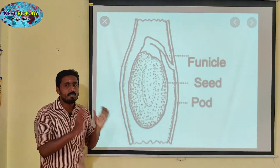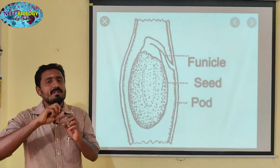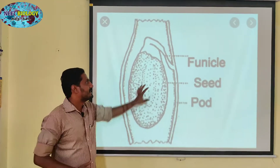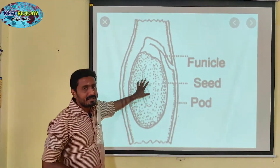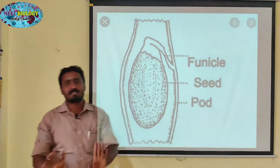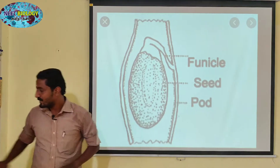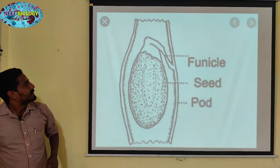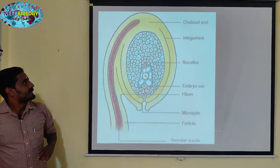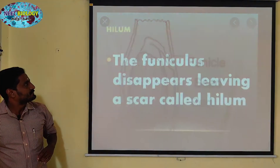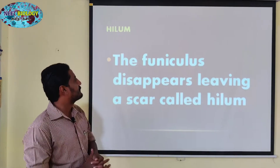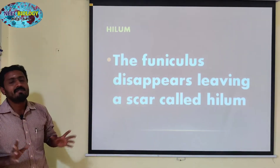So, after fertilization, the ovary wall becomes the fruit wall. The funicle is a soul camp. After fertilization, the seed develops. The funicle disappears, leaving a scar.